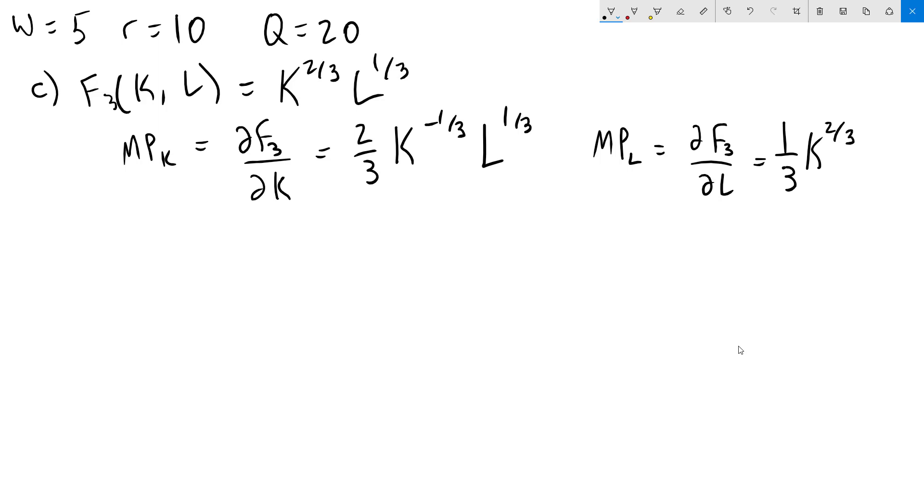K to the 2 thirds comes along. And we subtract 1 from the 1 third to get L to the negative 2 thirds. Next, we will calculate the marginal rate of technical substitution by taking the MPL divided by the MPK.